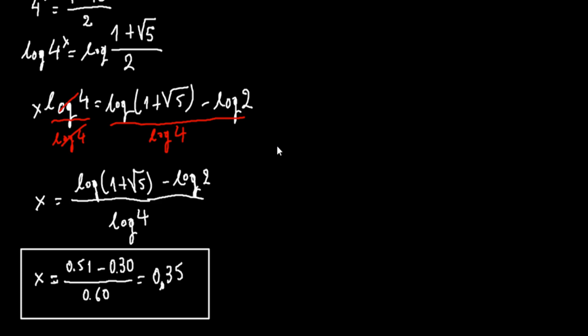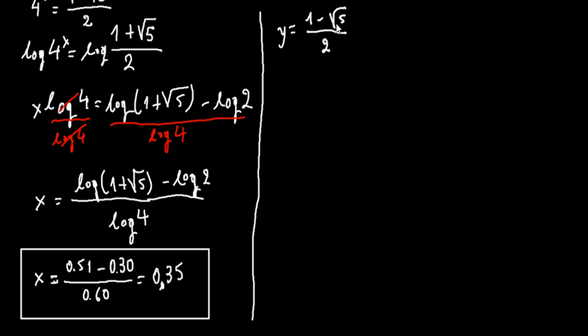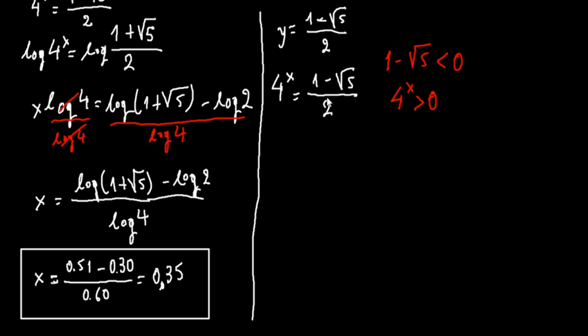Now let's check the second solution: y equals (1 minus square root of 5) over 2. We would have 4 to the x equals (1 minus square root of 5) over 2. But we know that 1 minus square root of 5 is less than zero, and 4 to the x is always positive, so this solution is rejected. Our only solution is x equals approximately 0.35.